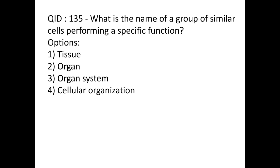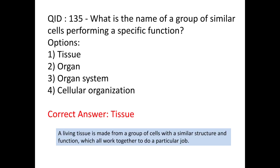What is the name for a group of similar cells performing a specific function? The answer is tissue. A living tissue is made from a group of cells with a similar structure and function which all work together to do a particular job. So the correct answer is tissue.